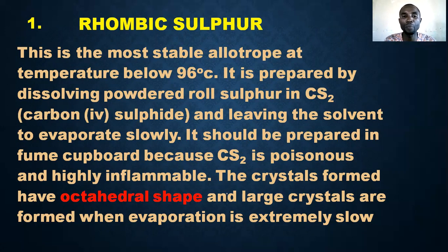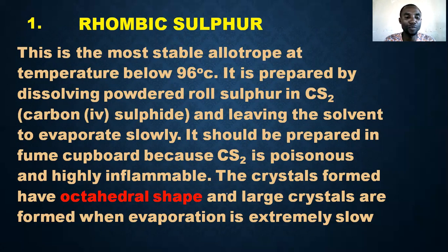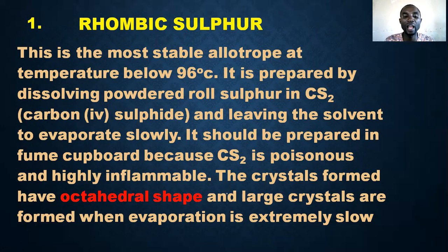Because carbon disulfide is poisonous and highly inflammable, we prepare rhombic sulfur in small amounts in the fume cupboard in our laboratories. The crystals formed have an orthorhedral shape, and large crystals are formed when evaporation is extremely slow.